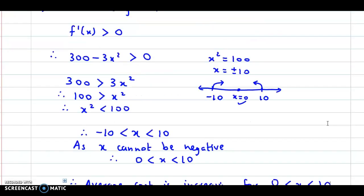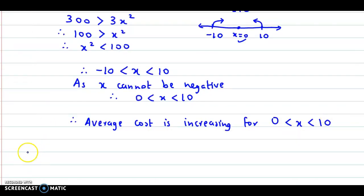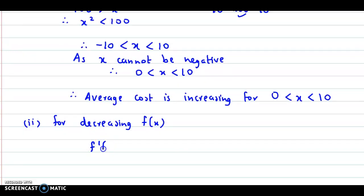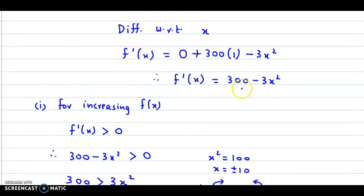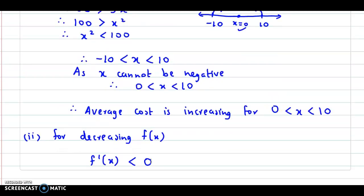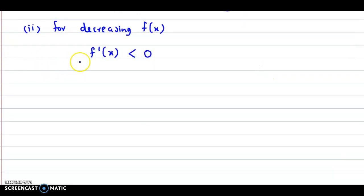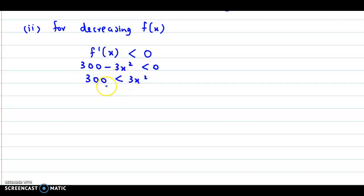That was the increasing part. Now the next part asked is decreasing. So the second part: for decreasing f of x, f dash x must be less than 0 — that is the condition for a decreasing function. Now f dash x was found to be 300 minus 3x square. Substituting, 300 minus 3x square must be less than 0, so 300 is less than 3x square. Dividing both sides by 3, we get 100 less than x square, and we can say x square is greater than 100.